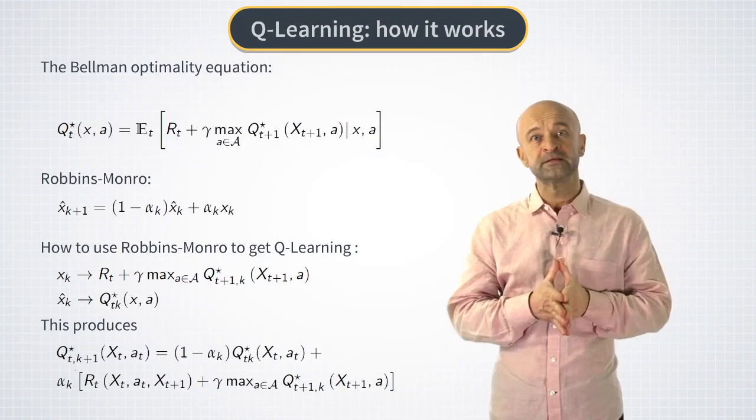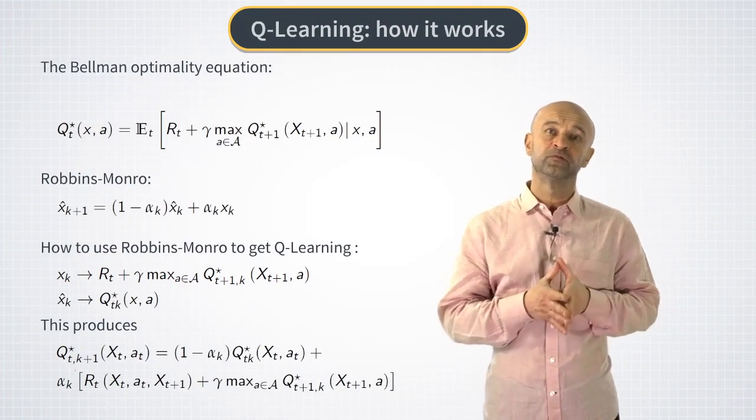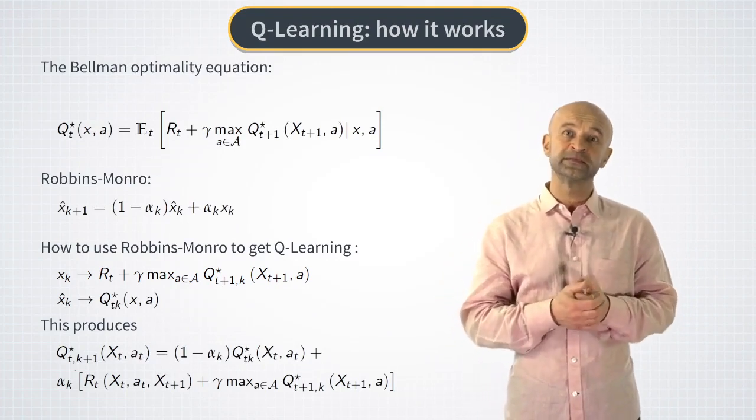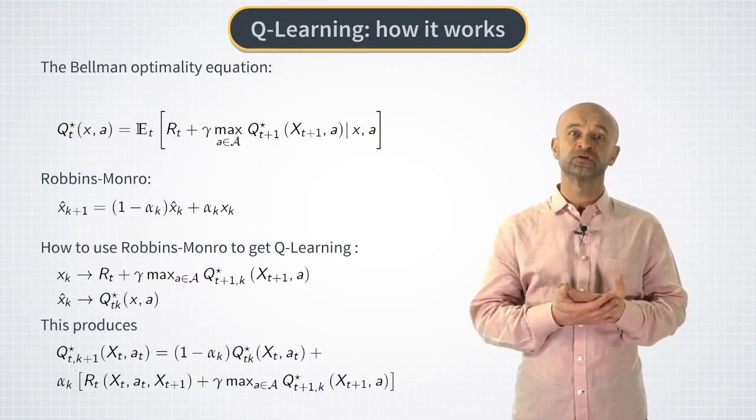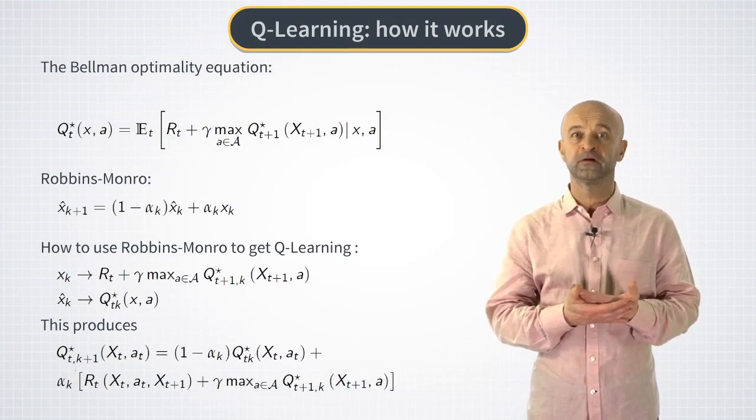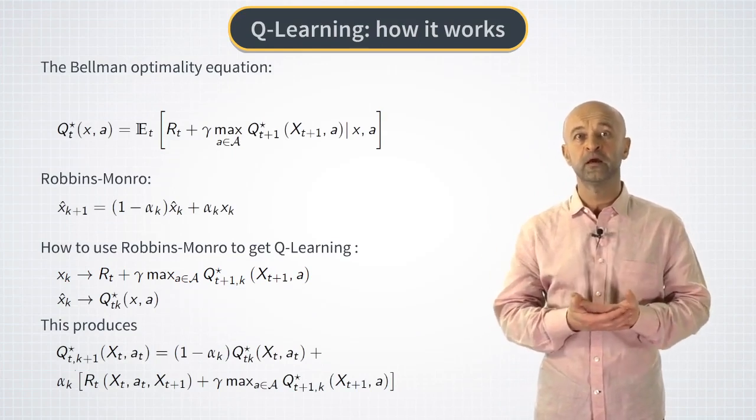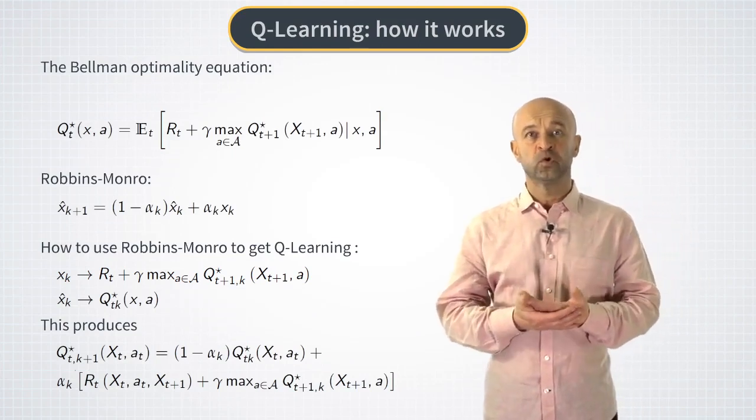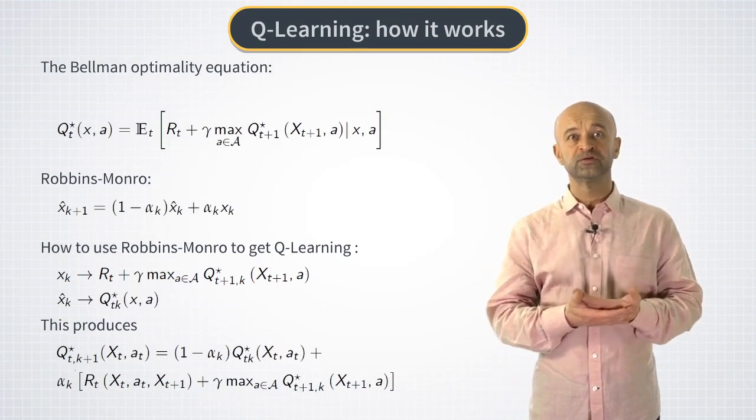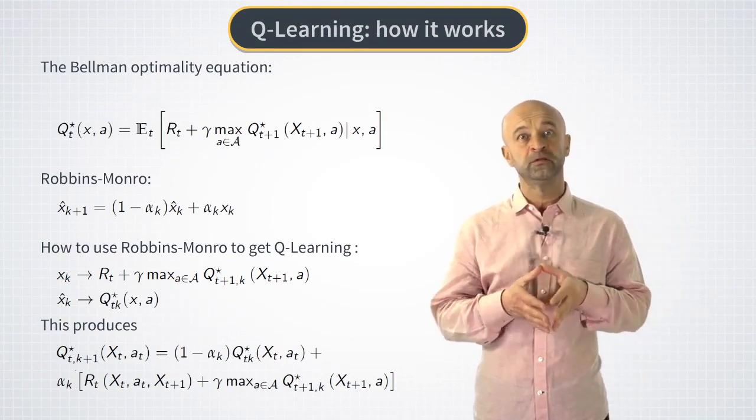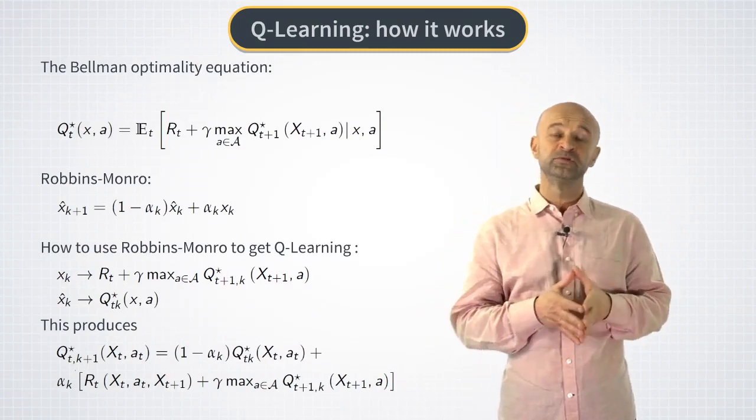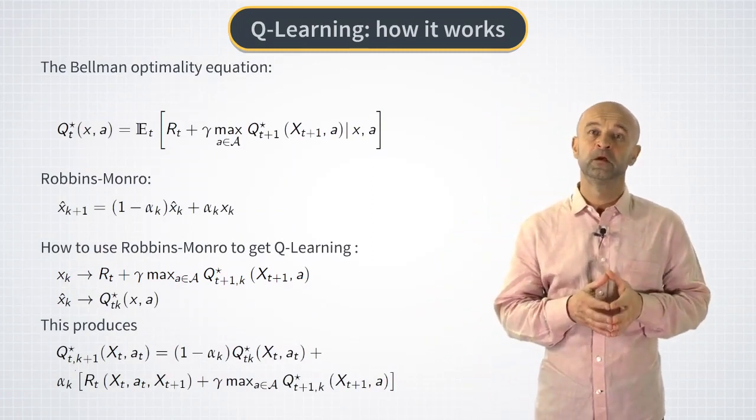In words, it says that the new update for the value of Q function at the node xt and at is given by a previous estimation of its value scaled by the factor 1 minus alpha k plus another term equal to alpha k times the new observed value of the quantity that appears in the right-hand side of the Bellman optimality equation.